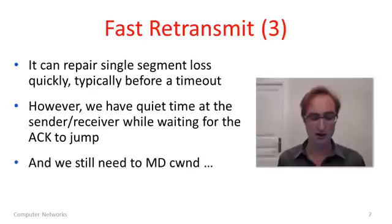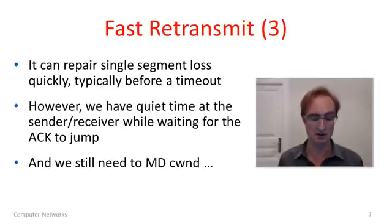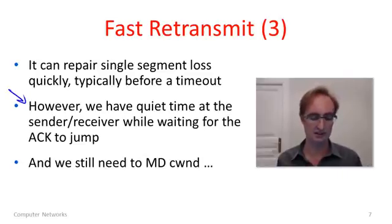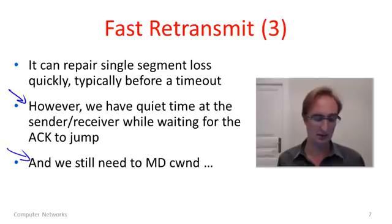Fast retransmit can repair a single segment loss and detect it very quickly — usually before the timeout fires, since it's about the shortest possible time before you could hear information from the other side about the loss. However, after the fast retransmit segment there was a quiet period where we were waiting for the ACK to advance even though we were getting further duplicate ACKs. We weren't sending packets, and we still haven't done the multiplicative decrease of the congestion window. So we're not finished.